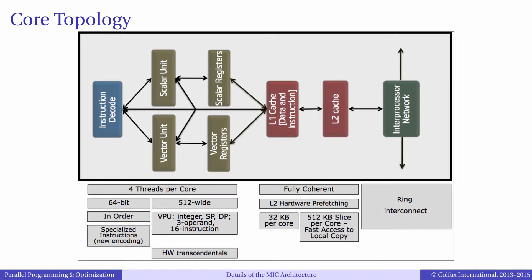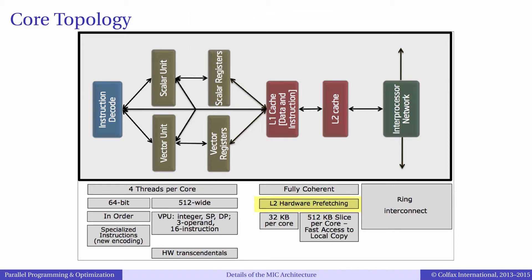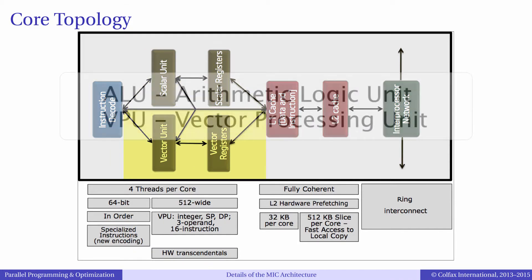Now let's take a look at the core topology. Each core has a 512 kilobyte level 2 cache and a 64 kilobyte level 1 cache — 32 kilobytes for data and 32 kilobytes for instructions. The L2 cache has a hardware prefetcher which may help to hide data access latency, but the level 1 cache must rely on software prefetching. The compiler is often able to analyze memory access patterns of the application and insert prefetch instructions whenever they are needed. The compute part of the core can be divided into two parts: the scalar unit and the vector processing unit or VPU.